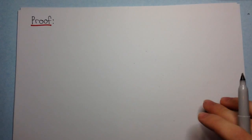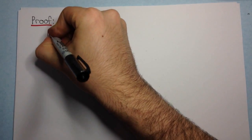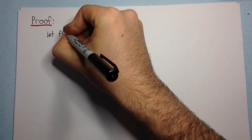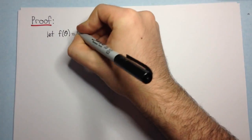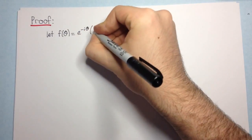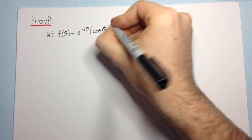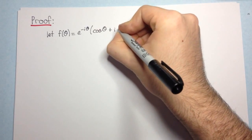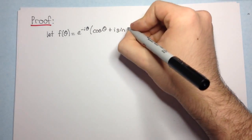Okay, so the proof goes as follows. So, let f of theta equal e to the negative i theta into cos theta plus i sin theta.